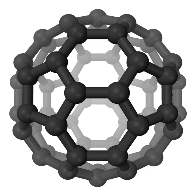Tholins do not form naturally on modern-day Earth, but they are found in great abundance on the surface of icy bodies in the outer solar system, and as reddish aerosols in the atmosphere of outer solar system planets and moons. When in the presence of water, tholins may facilitate the formation of prebiotic chemistry, with implications for the origins of life on Earth and possibly on other planets. As particles in an atmosphere, tholins scatter light and can affect habitability.